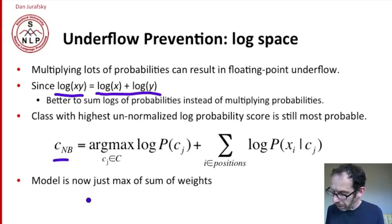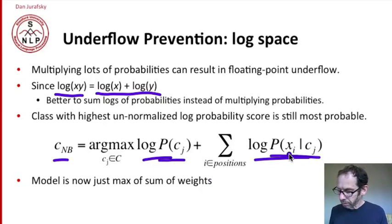Here's the Naive Bayes formula expressed now in terms of log probabilities instead of probabilities. It's still an argmax, but now instead of multiplying a probability and a product of likelihoods, we're adding a log probability with a sum of log likelihoods. So the model is just choosing the class that maximizes a sum of weights. Very simple model.